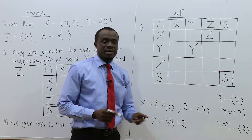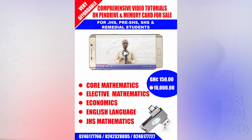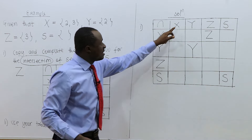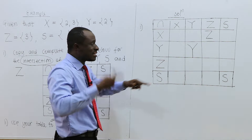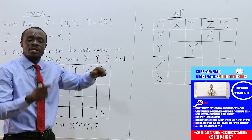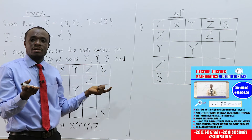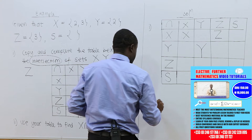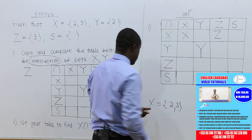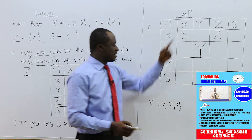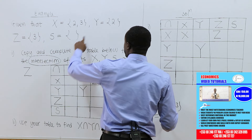Now, S intersection X — we have the empty set intersection X, and clearly you'll be getting the empty set. Now, X intersection X — the element common to X and X: X is {2, 3}, and another X is also {2, 3}, so X intersection X gives {2, 3}, which is the same as X. That is why we have X there.